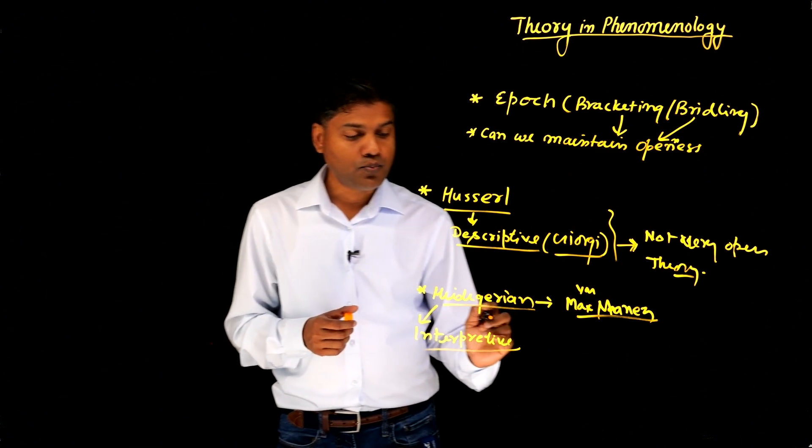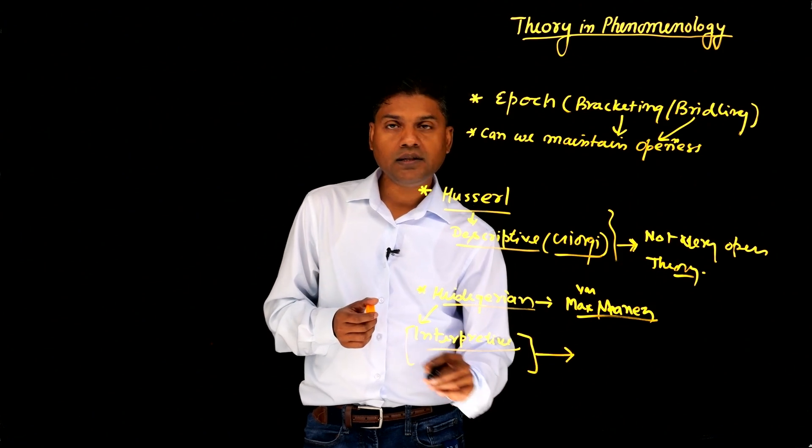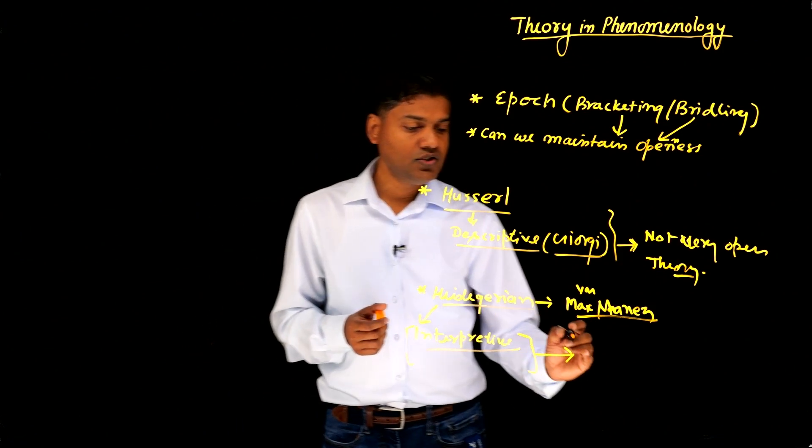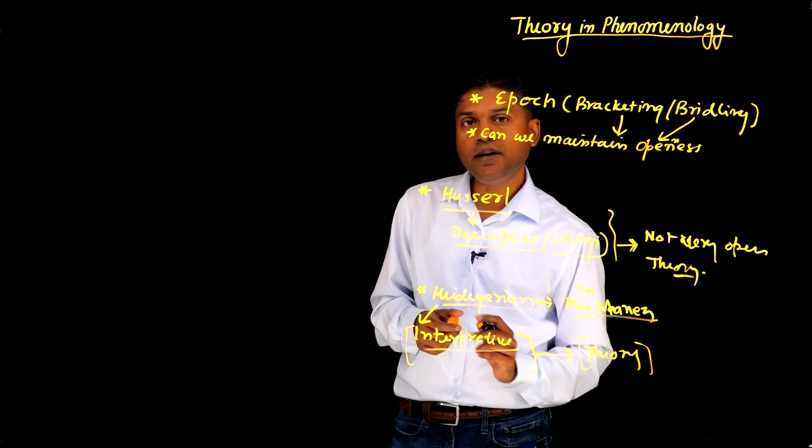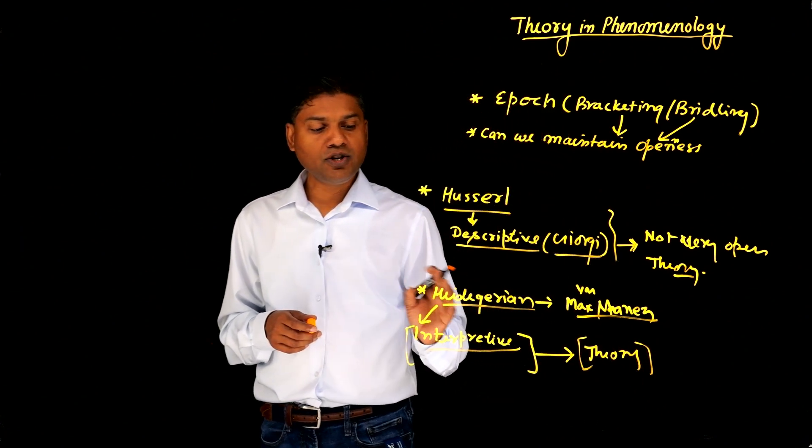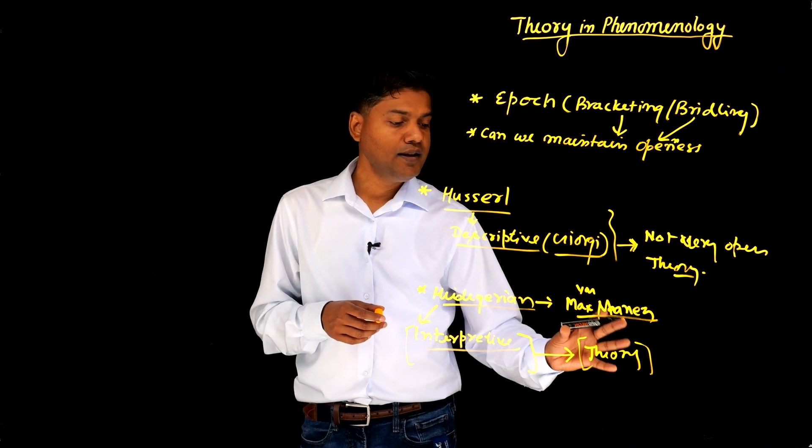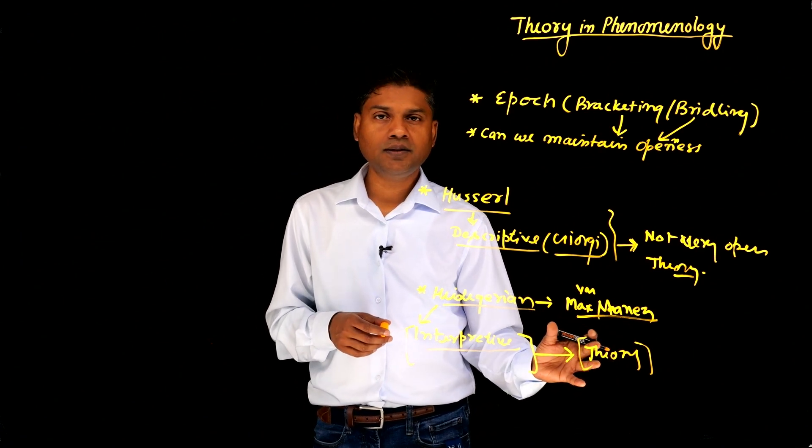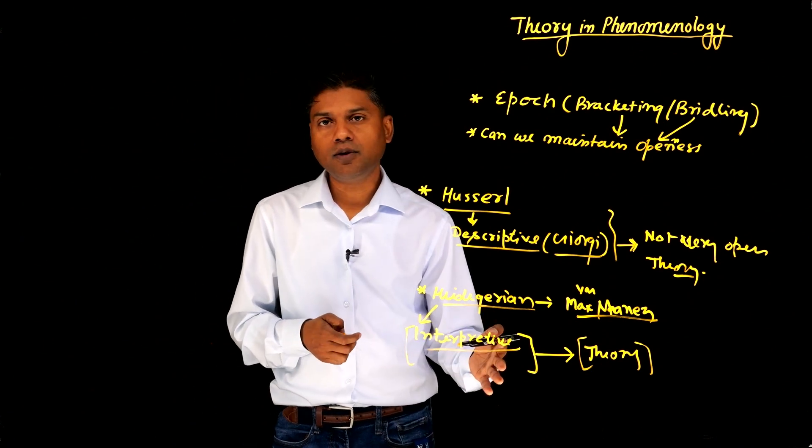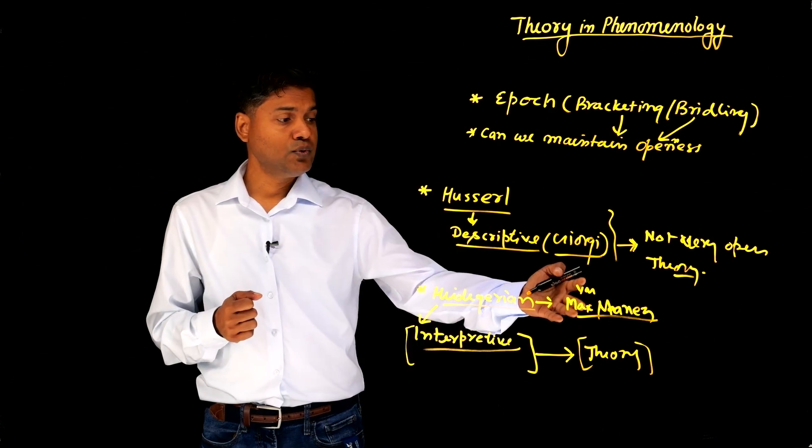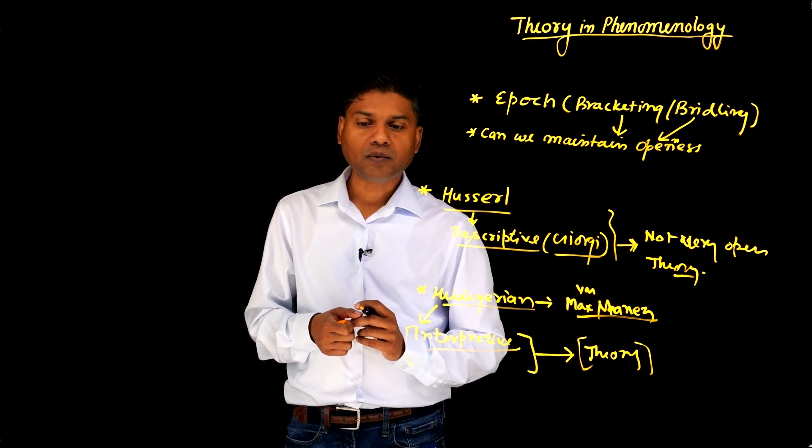Now, in the process of interpretation of the data, since we are engaged in interpretation, this is where a theory can be helpful in interpreting the data. So if you are using a Heideggerian approach to phenomenology, then using a theory seems pretty tied in, like fits in, in this approach of phenomenology. So if you are using Max van Manen's approach, then yes, you can use a theory.